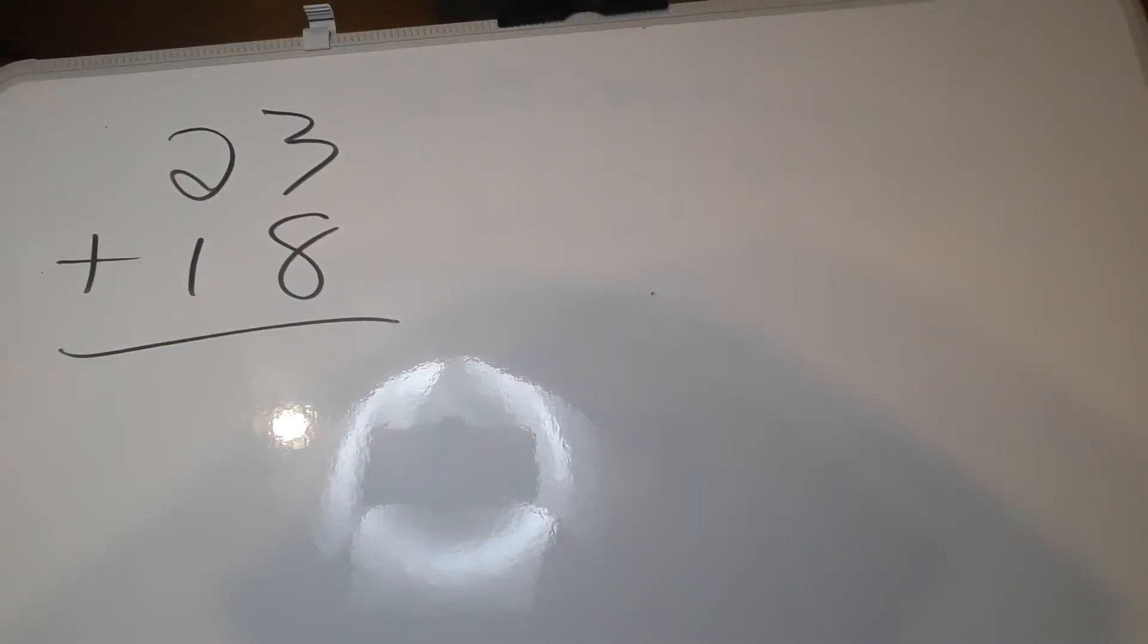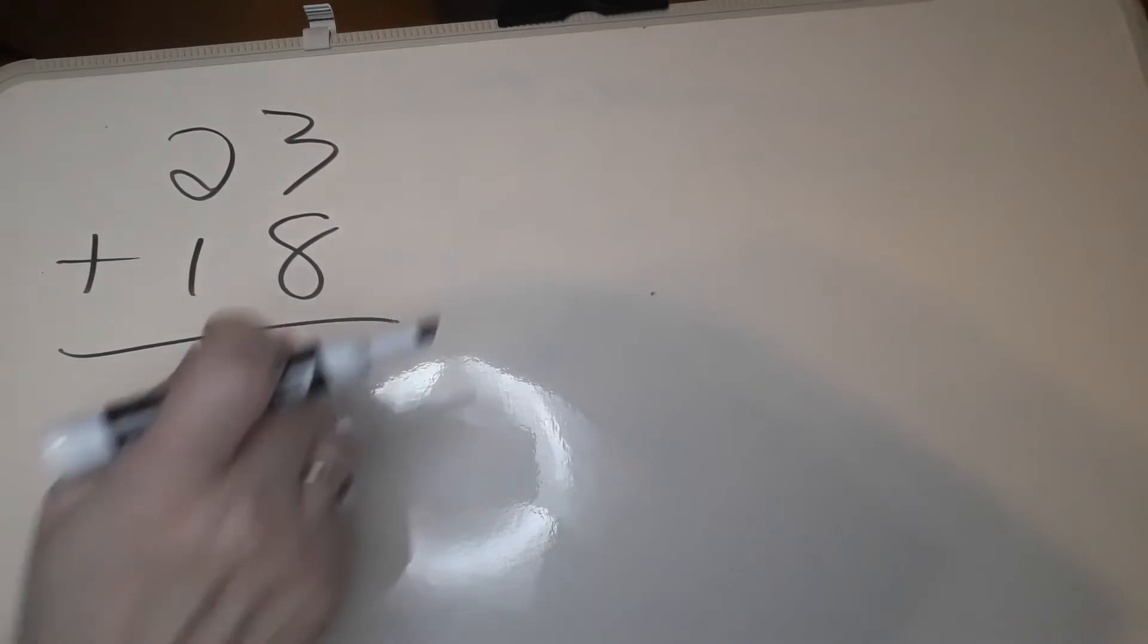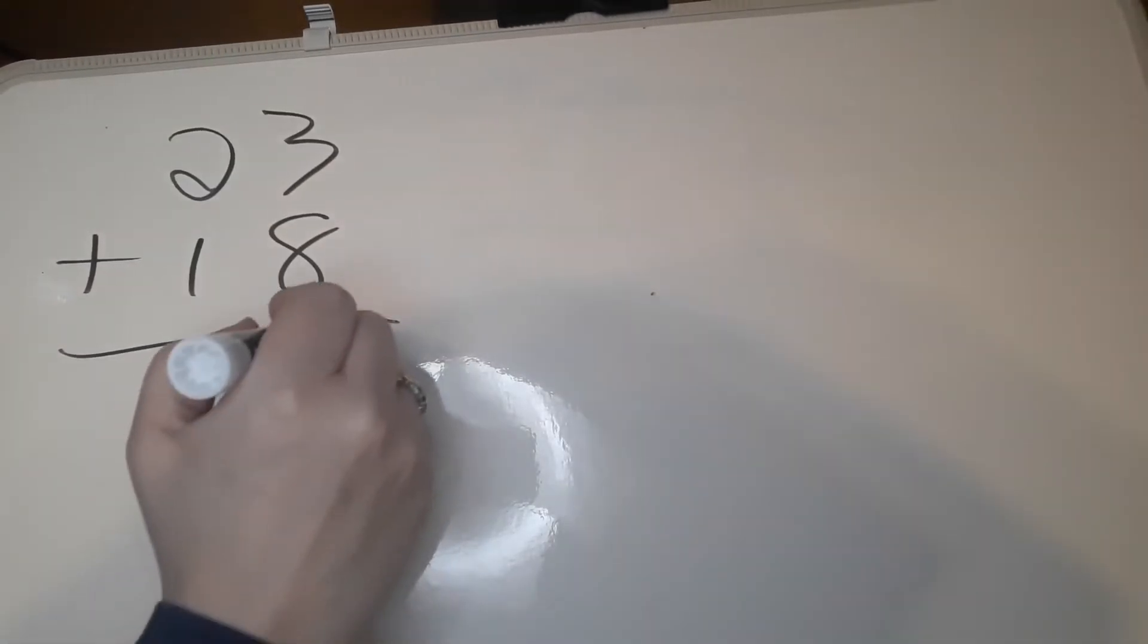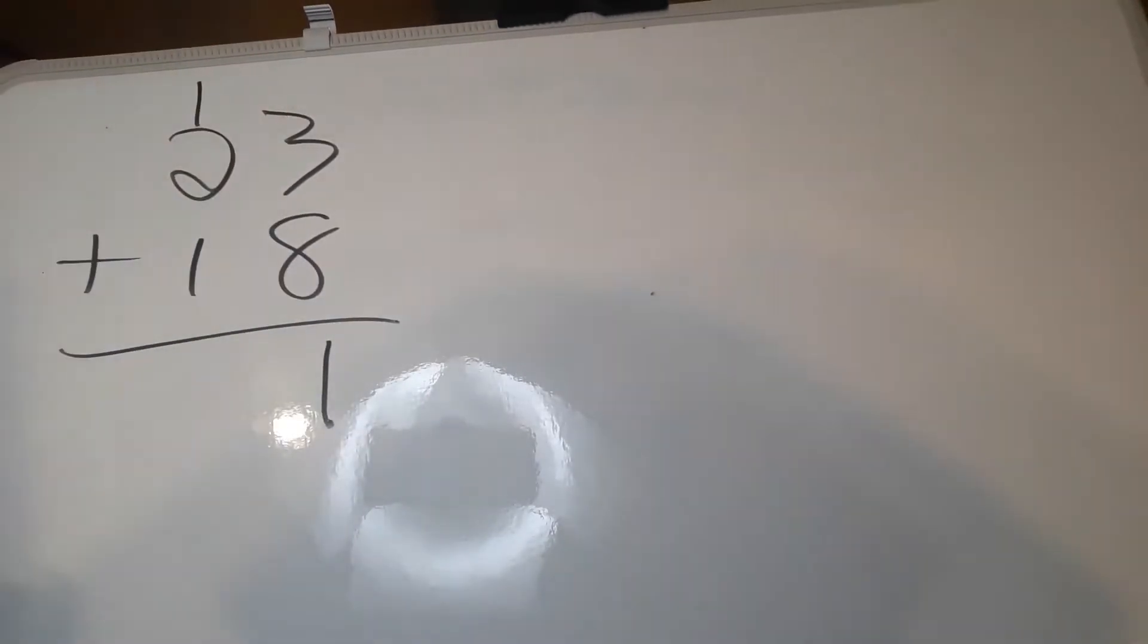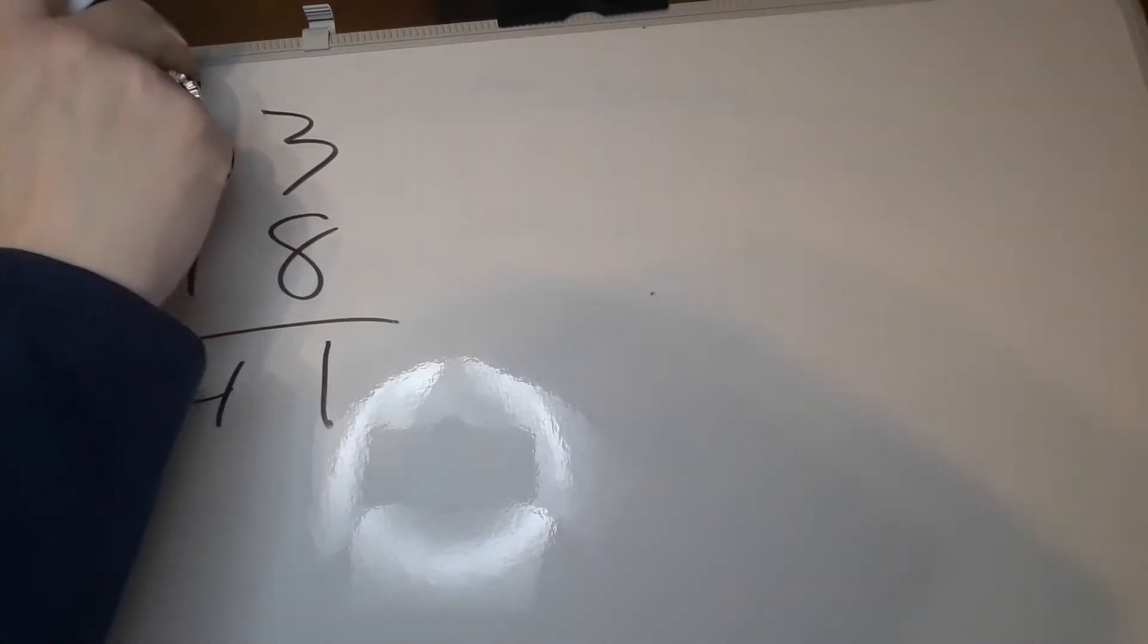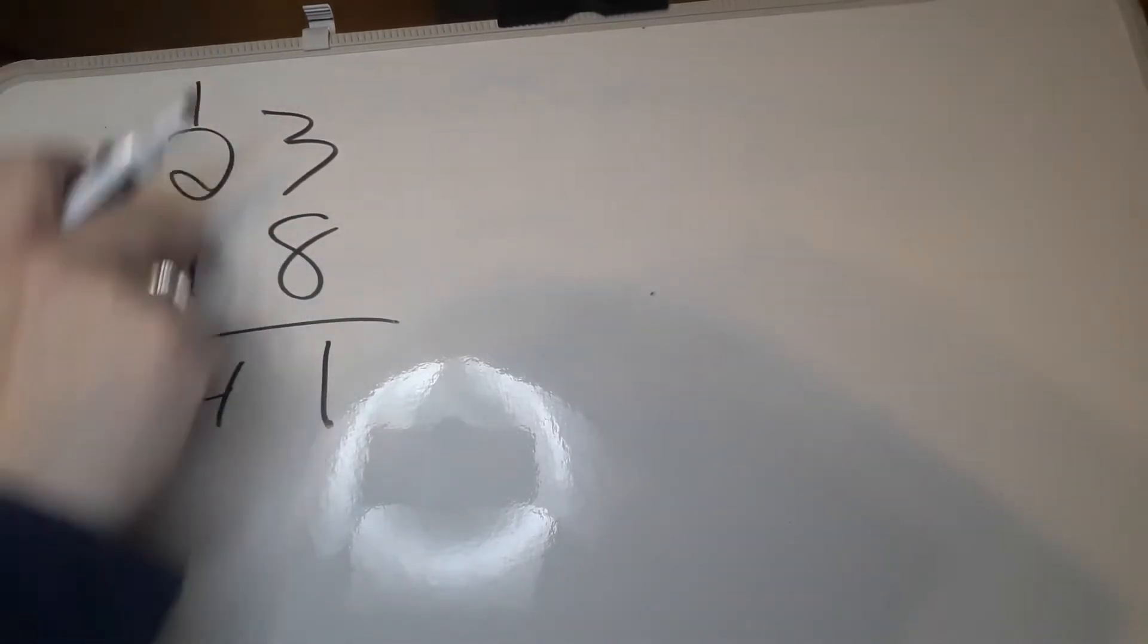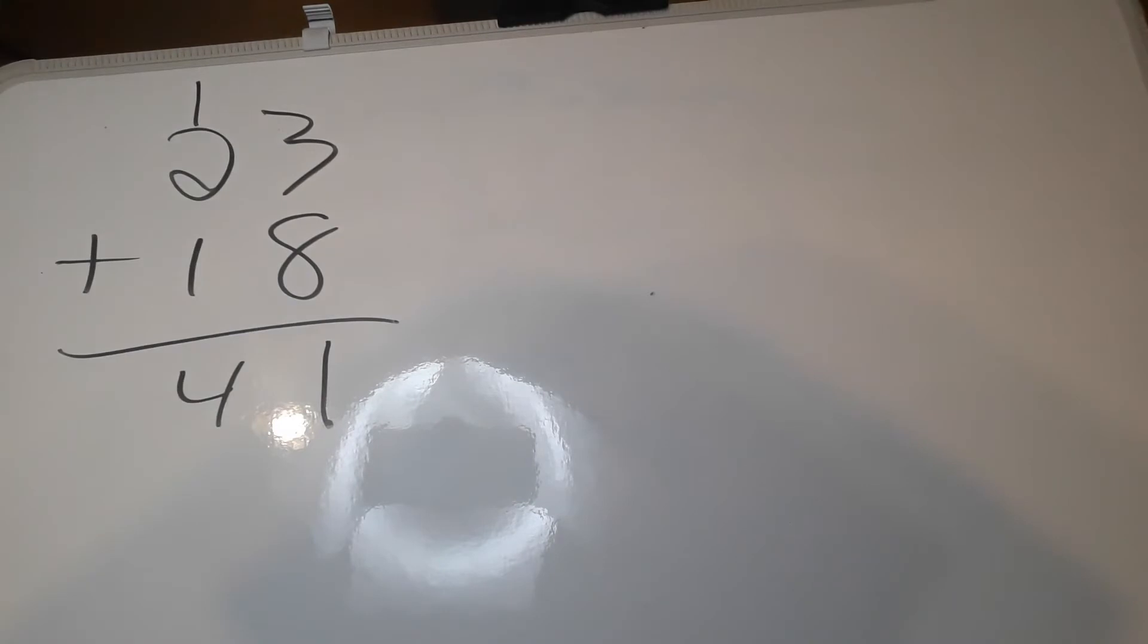When we learned to add in school we were taught to set things up like this and then say 8 plus 3 is 11, put one down here, carry the one, and then add these three numbers to make 41. However, that's not the way our heads work because keeping track of these numbers uses up all our brain space. We don't have so many numbers that we can remember at the same time. So there's another way of doing it.